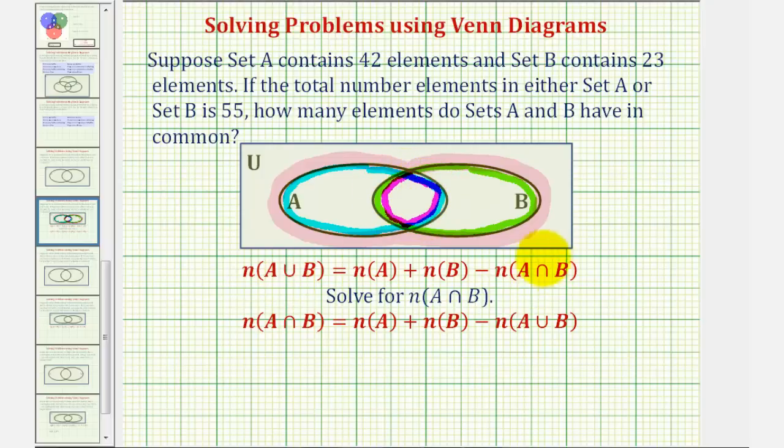The reason we have to subtract this is because notice how these elements were counted twice, once in set A and a second time in set B. So if we subtract them out once, we'd only count them once, which would give us the number of elements in the union.